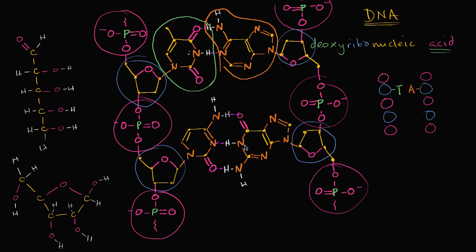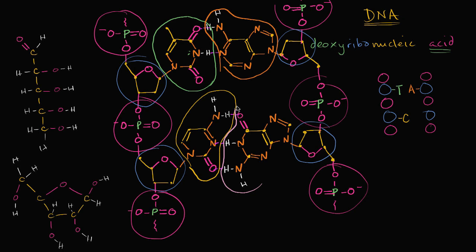And then we go to the next rung below it. This nitrogenous base is cytosine. And it is paired up with guanine, which I'll do in this color. So it is paired up with guanine right over there.